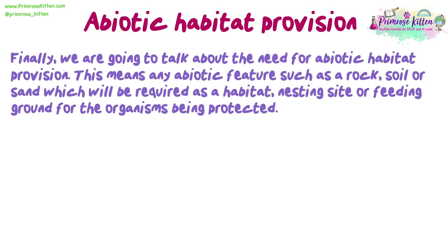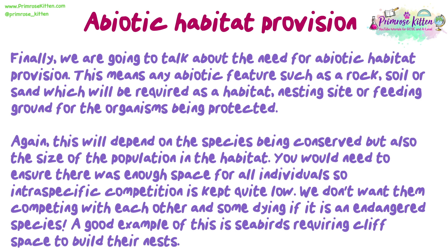We are going to talk about the need for abiotic habitat provision. This means any abiotic feature such as rock, soil or sand, which will be required as a habitat, nesting site or feeding ground for the organisms being protected. This will depend on the species being conserved but also the size of the population in the habitat. You would need to ensure there was enough space for all individuals, so intra-specific competition is kept quite low — we don't want them competing with each other and some dying if it is an endangered species. A good example of this is seabirds requiring cliff space to build their nests.